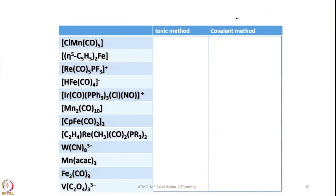Welcome once again to the MSP lecture series on Advanced Transmetallic Chemistry. In my previous lecture I had initiated discussion on the 18-electron rule, covering both the ionic method and the covalent or neutral method of electron counting. Let me continue by giving more interesting examples. I have given several complexes in a table and let me do one or two examples using the covalent method.